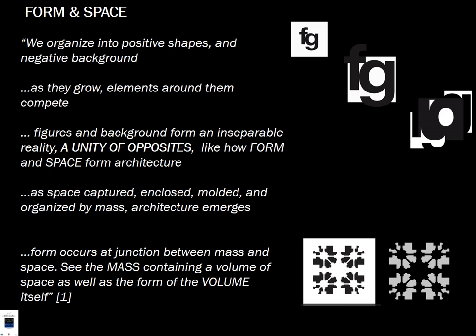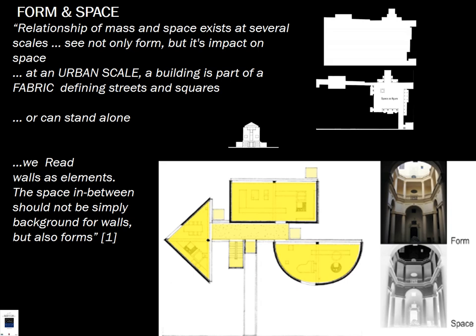We start with form and space. We organize positive shapes and negative backgrounds and grow elements around them. The background and foreground are a unity of opposites — think of both positive and negative space. Form occurs at the junction between mass and space. The mass contains a volume of space as well as the form of the volume itself.